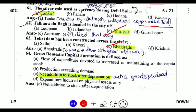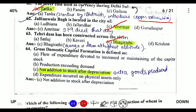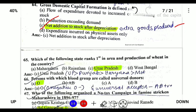Gross Domestic Capital Formation is defined as the net addition to stock after depreciation. It is the addition of stock minus the losses due to depreciation. Depreciation means loss in asset value of a product.